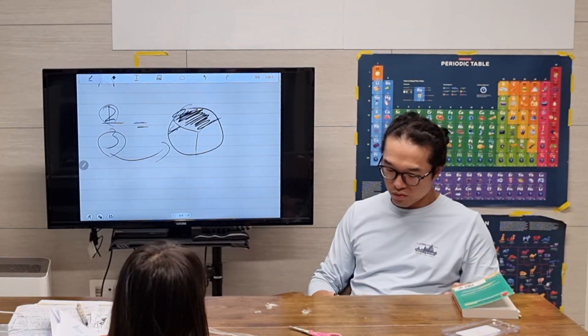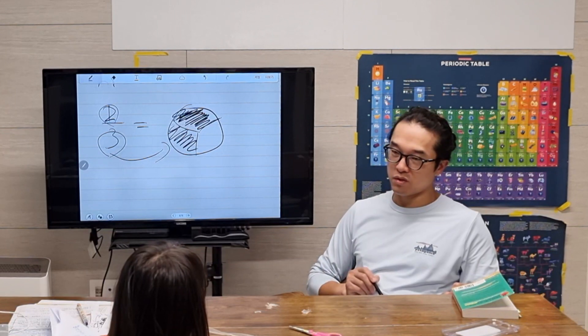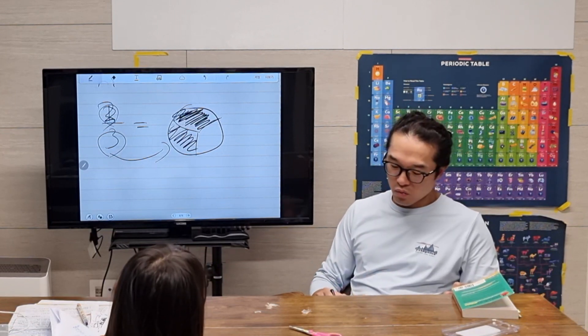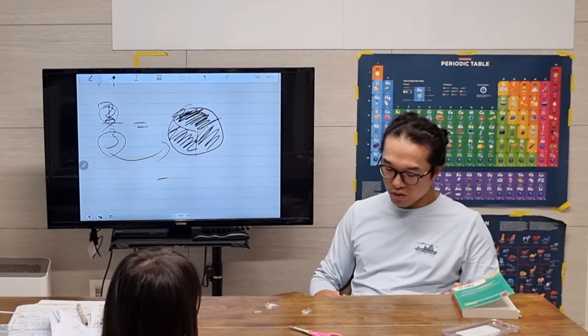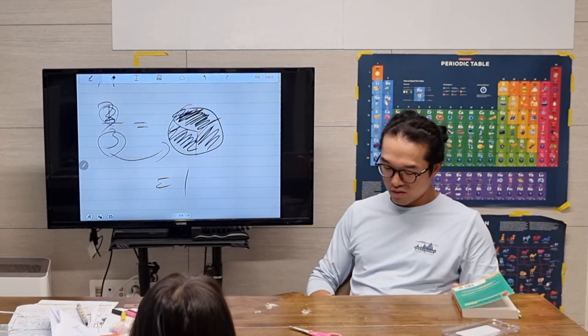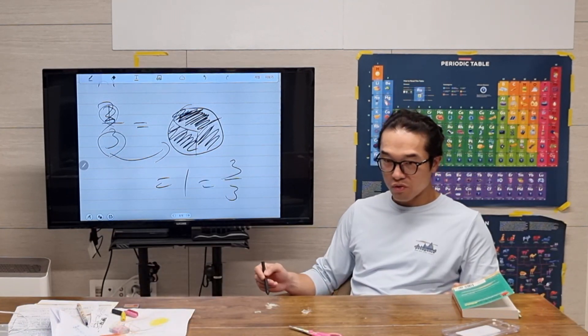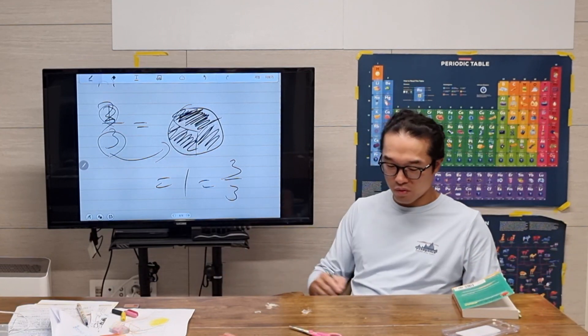If it's two, we chose two pieces. If it's three, we chose three pieces. So it means one. Three over three means one. It means one.